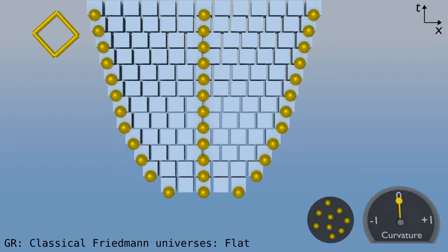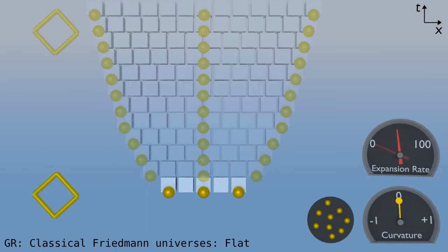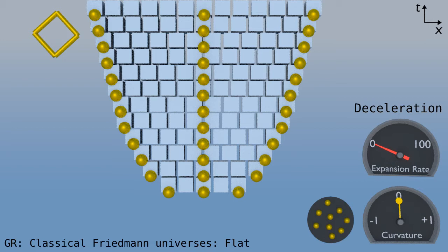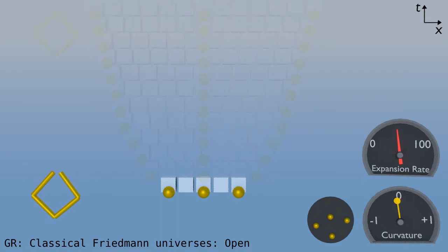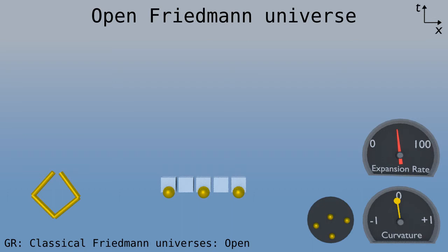As before, the particles really stay in place, but space is added between them. Note that a universe that starts out flat remains flat. In our dial, the yellow pointer looks like an upside-down pendulum. When it's perfectly balanced, straight up, then it stays there forever. Also note that the rate of expansion slows down with time. It's decelerating. Let's add a speedometer and run that again. For a flat universe, the expansion rate goes towards zero.